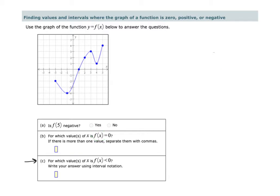And finally, Part C, for which value or values of x is f of x less than 0. So again, f of x being less than 0 is basically asking you to find where on the graph are the y values less than 0.